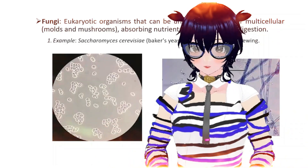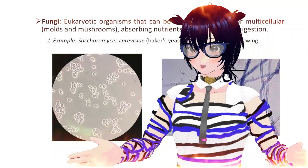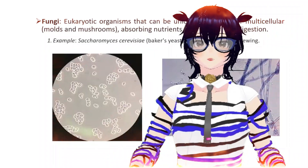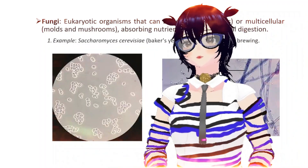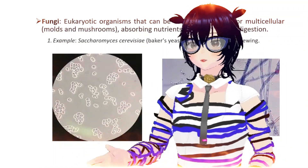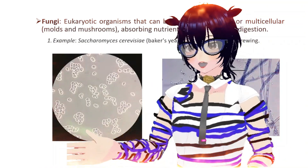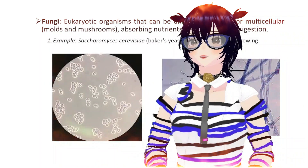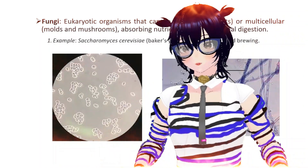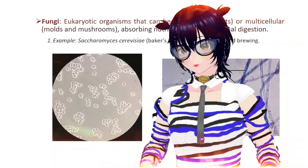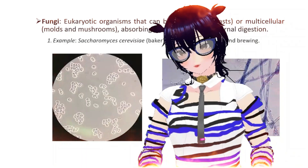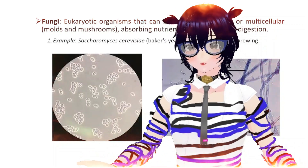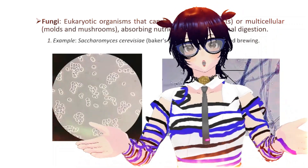The eukaryotic cells can be unicellular or can be multicellular. Fungi actually has both. The unicellular cells in the fungi are called yeast, while the multicellular are called molds and mushrooms. Mushroom is actually very different, so we have to name it separately.